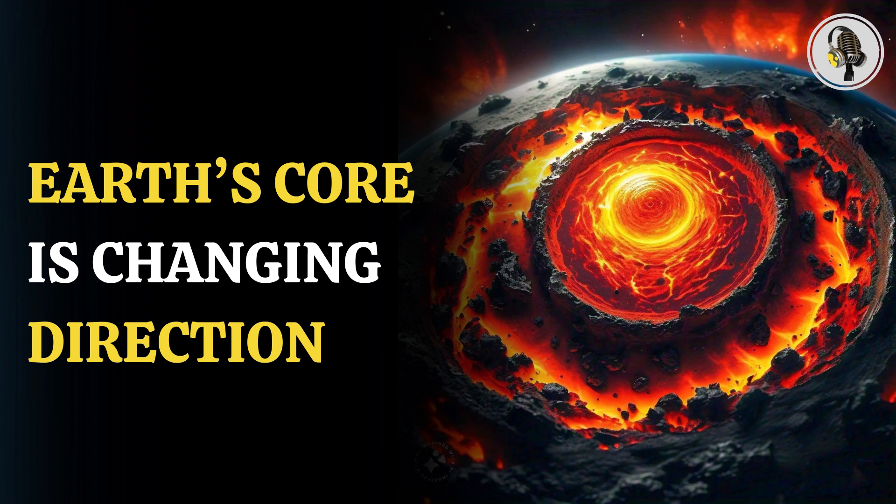Earth's inner core moves in relative motion with the speed of Earth like a swing, and one cycle of the swing is about seven decades, geoscientists told AFP. Previously, it switched paths in the early 1970s. According to the prediction by researchers from China's Peking University, the successive motion would be in the 2040s.